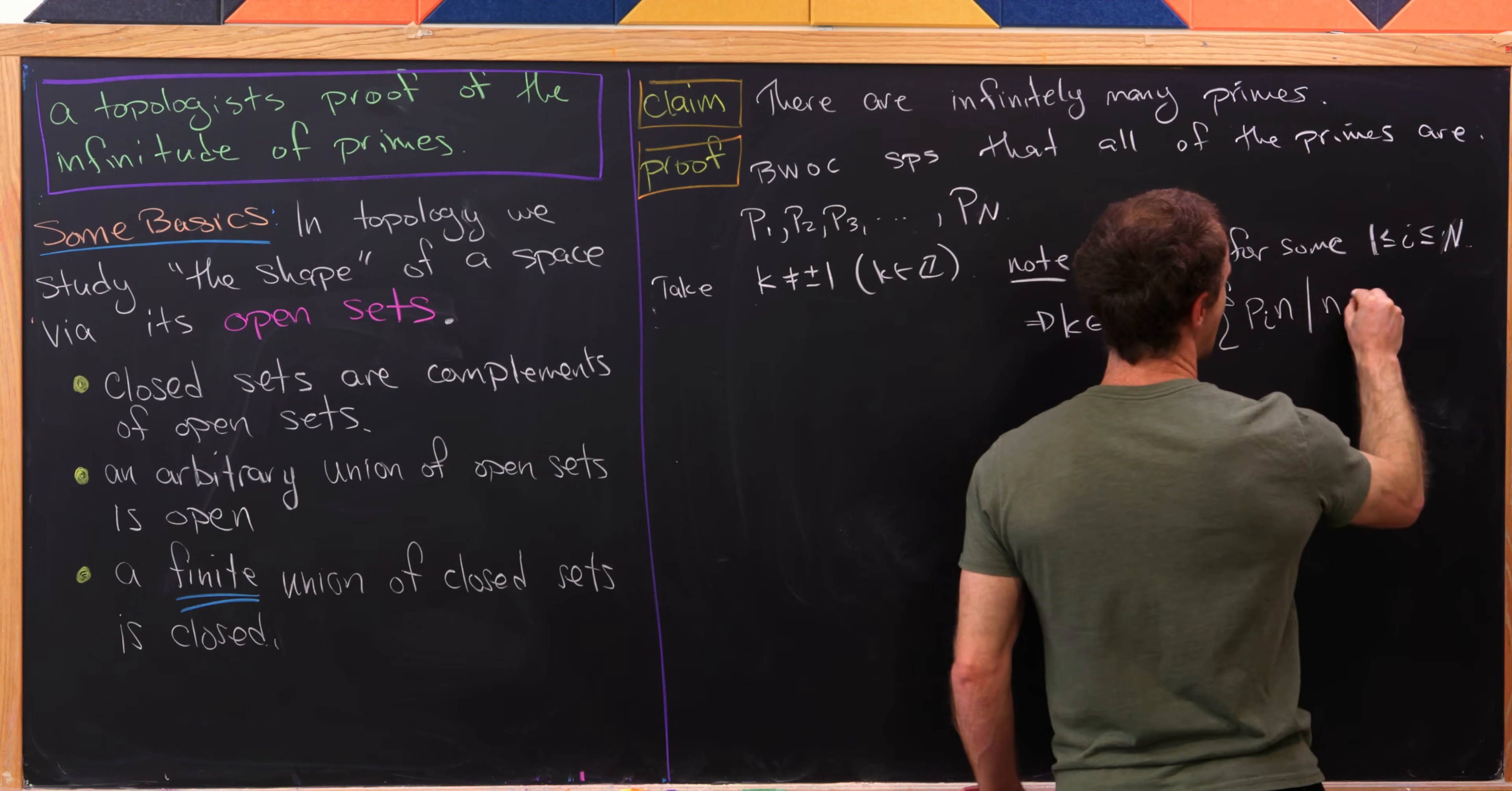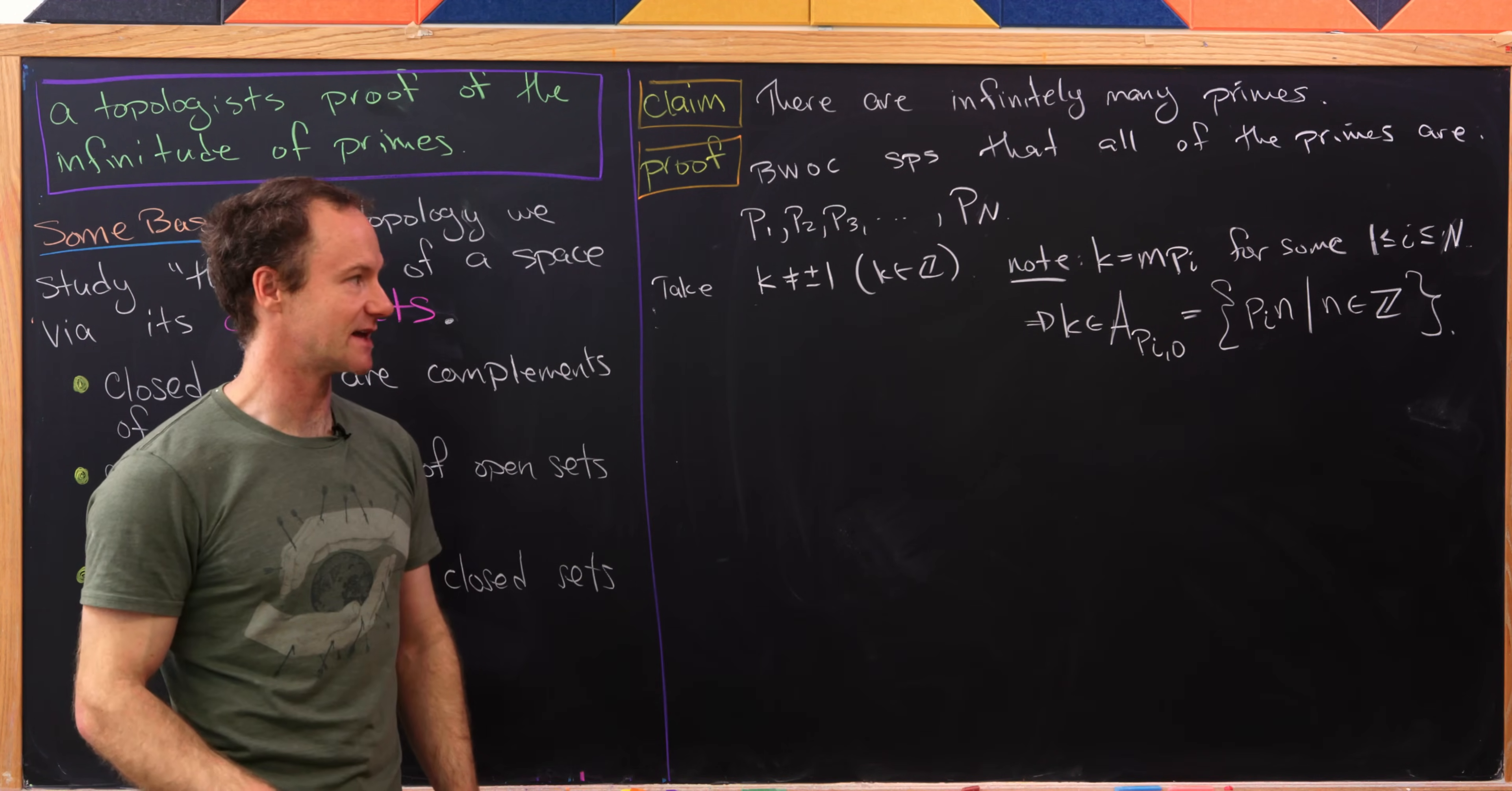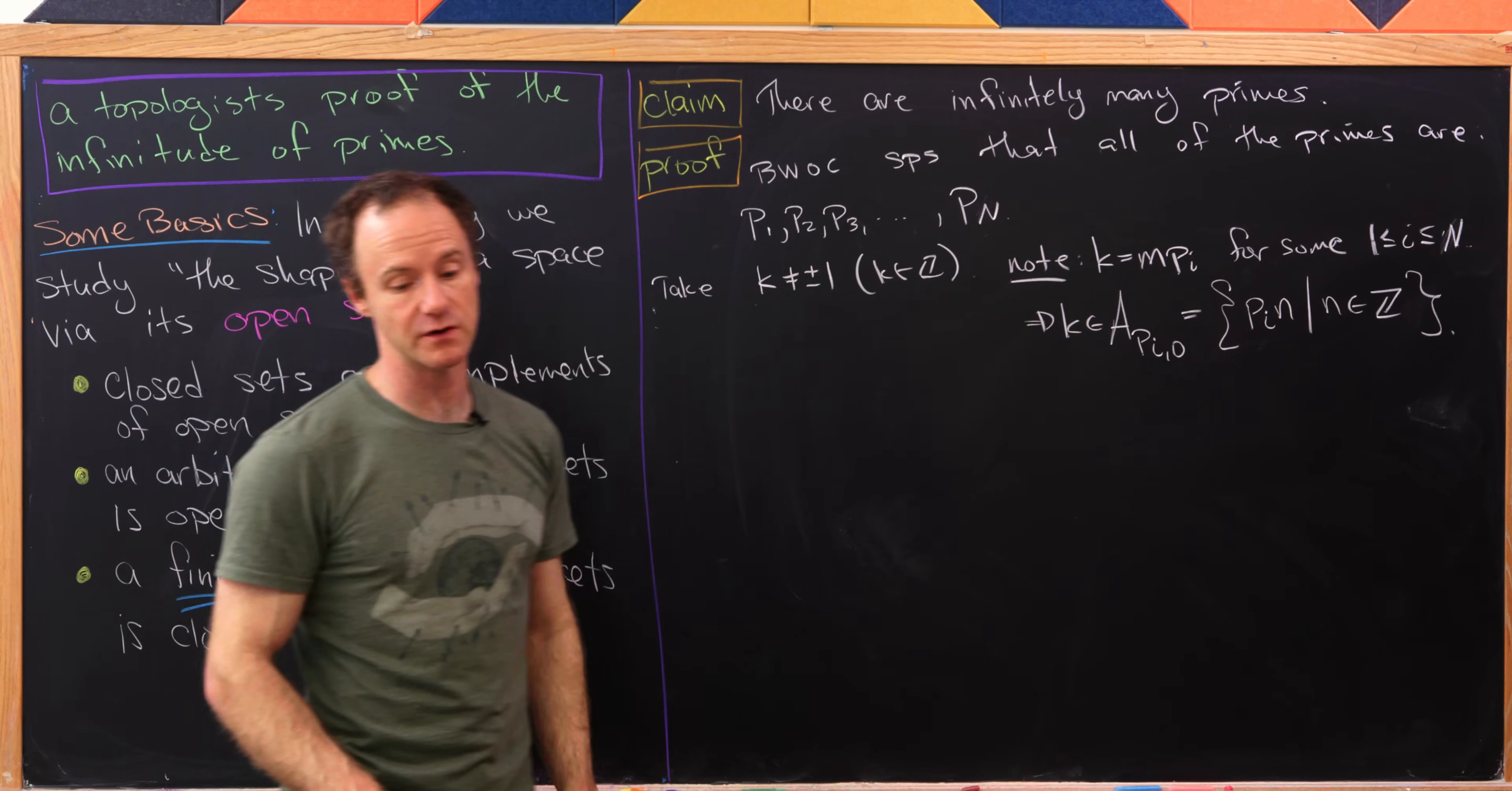So this is pi times N as N ranges over all integers. Well, definitely our k is of that form. So that means k is in that set. But look at what we've done.